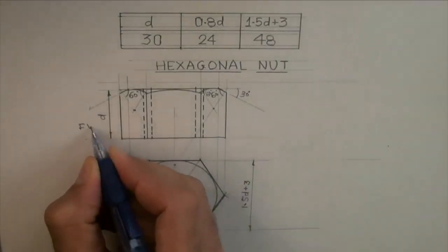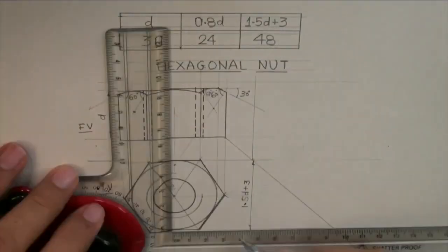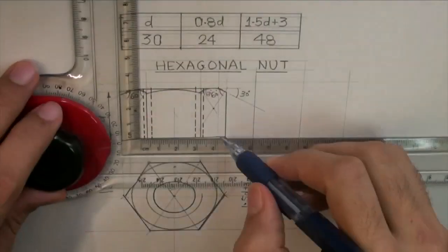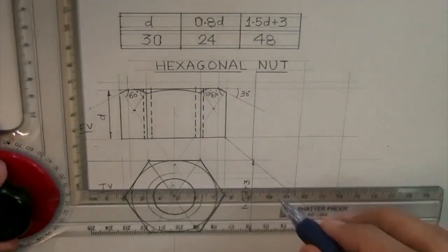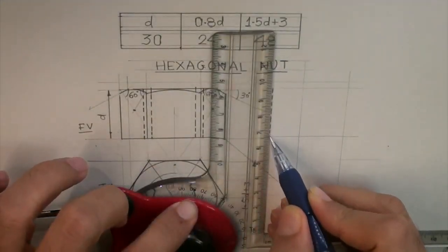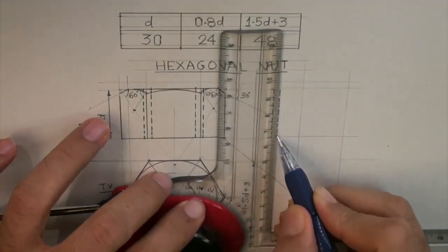So we have done front view and top view, now we will draw side view. We will project from top view, we will get a box. Then we will project the dotted line also, so we will get 4 dotted lines in side view.